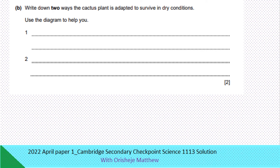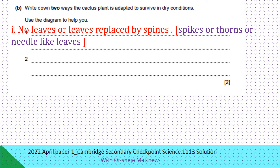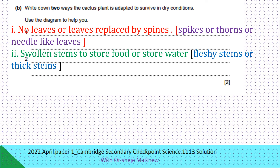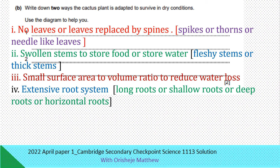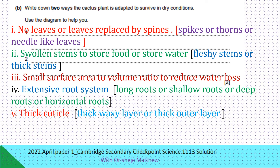Write down two ways the cactus plant is adapted to survive in dry conditions. Use the diagram to help you. No leaves, or leaves replaced with spines, spikes, thorns, or needle-like leaves. Swollen stem to store food or water, or thick stem. Small surface area to volume ratio to reduce water loss. Extensive root system — long root, shallow root, deep root, or horizontal root. Thick cortical layer or thick waxy layer or thick outer layer.